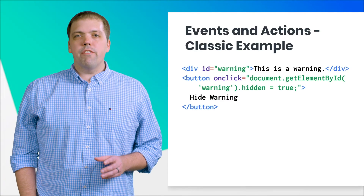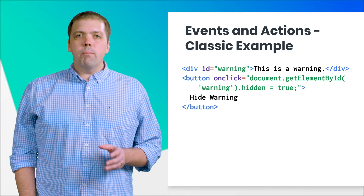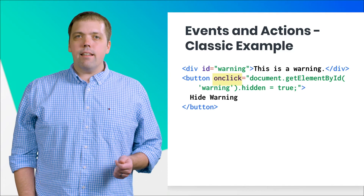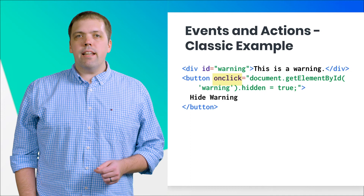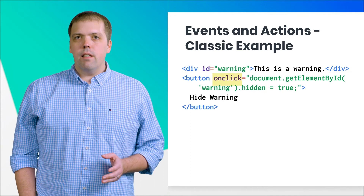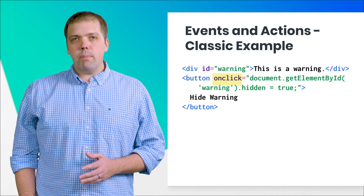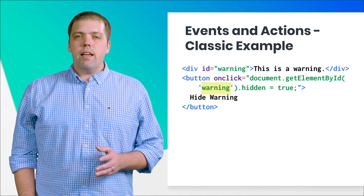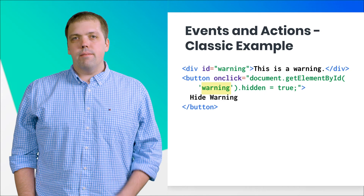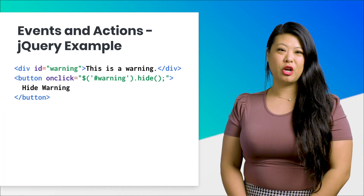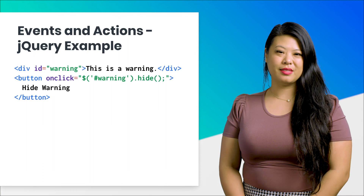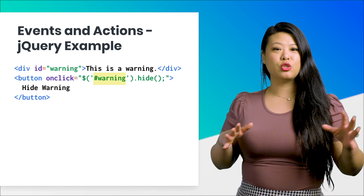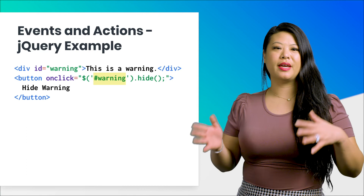This same sequence of events could be implemented in classic HTML like this. onClick assigns the event handler to the button element. When the click happens, we get the ID of the HTML element with ID 'warning' and we hide it. If you're ever using jQuery, your code might look like this — again using onClick to assign the event handler, with a shorter syntax to hide the element.